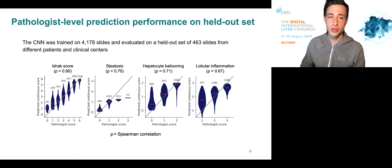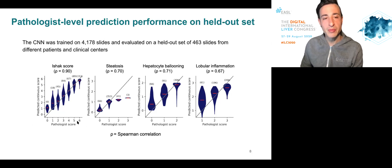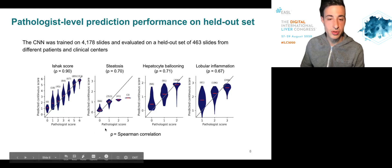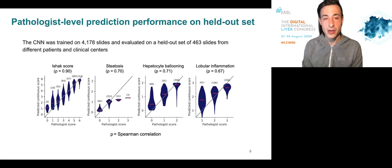We show a violin plot for each of the scores, where on the y-axis we have the predicted continuous score from our model, while on the x-axis we have the pathology score. The agreement between the predicted and the pathology scores is assessed using Spearman correlation. As you can see, we achieved an accuracy that is in the range of previously reported cross-pathologist agreement.